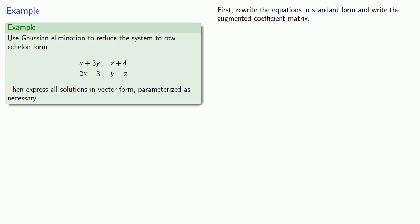This equation x plus 3y equals z plus 4 becomes 1x plus 3y plus negative 1z equals 4. Likewise, 2x minus 3 equals y minus z, getting everything over to the left hand side, becomes 2x plus negative 1y plus 1z equals 3. Now that our equations are in standard form, we can write down the augmented coefficient matrix.